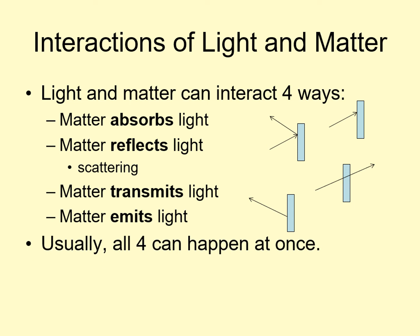For example, a person absorbs and reflects visible light, with different amounts of absorption at different colors. But we also transmit x-rays. That's why an x-ray machine can see through us. Finally, we emit infrared light. We'll see why shortly.